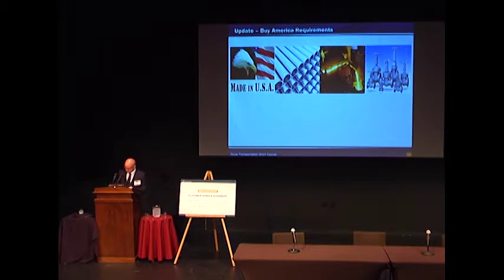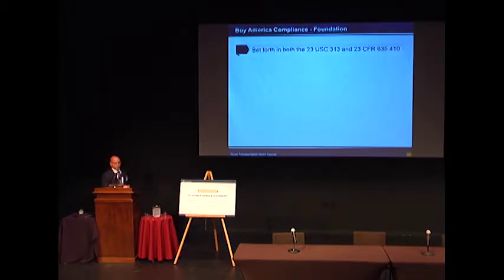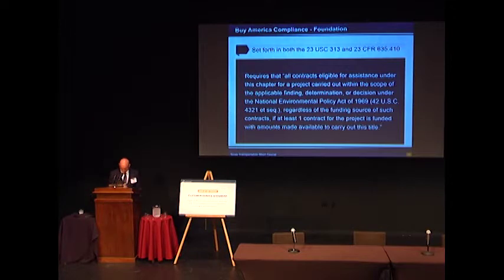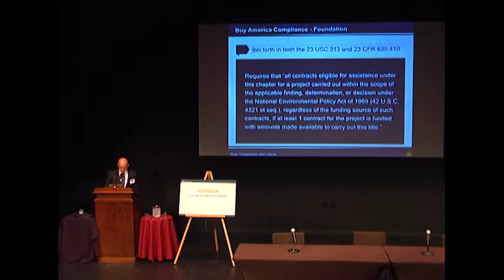Buy America is set forth in the USC and the CFRs 23-313 and 23-635-410 respectively, requiring that all contracts eligible for assistance under the chapter for a project carried out within the scope of the applicable NEPA finding, determination, and decision — regardless of the funding source — comply if at least one contract for the project is funded with federal amounts. In short, if federal money is involved in the procurement of iron and steel, this legislation governs it. We have detailed these items in our right-of-way manual under Chapter 3, Section 2, accessible both internal and external to TxDOT.